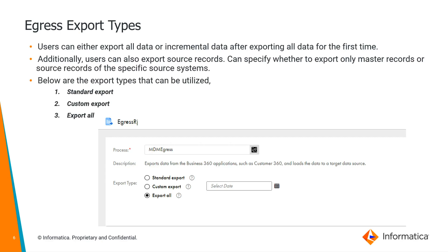Next, we will review the egress export types available in the system. Users can either export all the data or incremental data after exporting all data for the first time. Additionally, users can also export source records and specify whether they want to export only the master records or the source records for specific source systems. The common types available are Standard Export, Custom Export, and Export All.